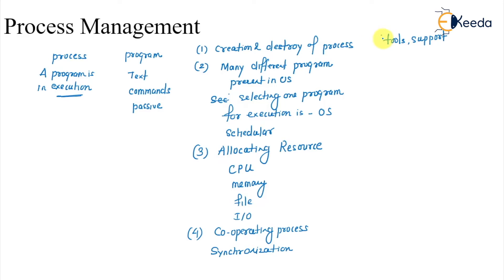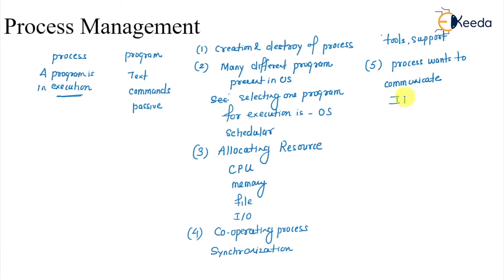The fifth responsibility is that processes want to communicate with each other. The standard term here is IPC — inter-process communication. We must have provisions in process management for performing IPC.